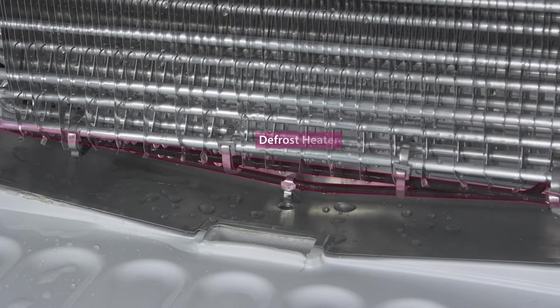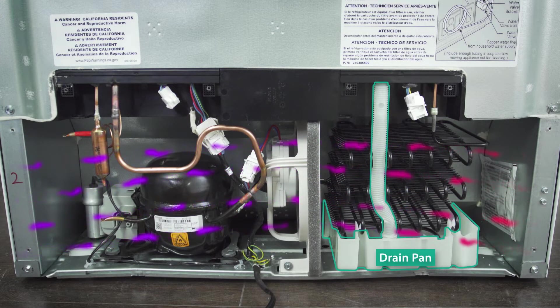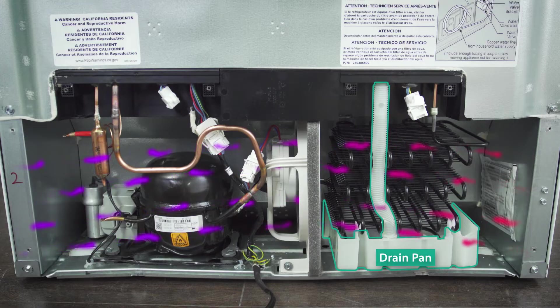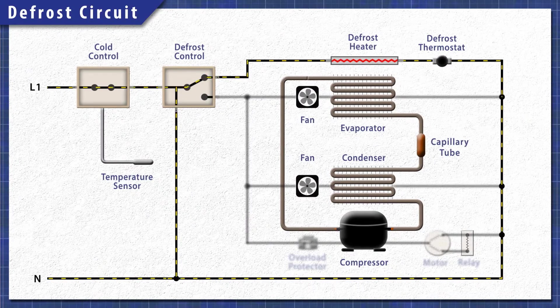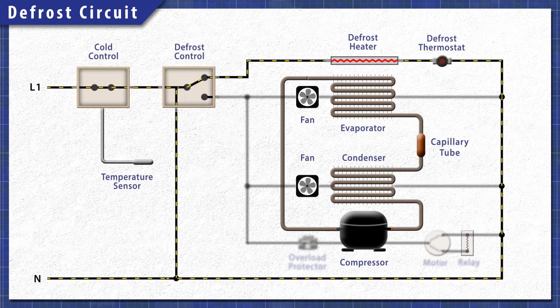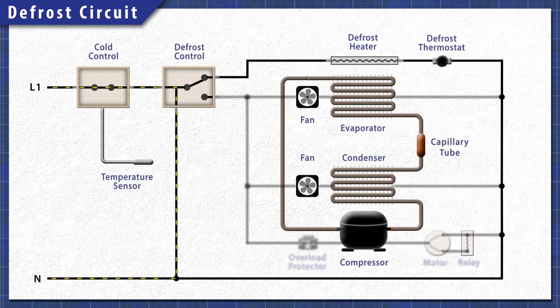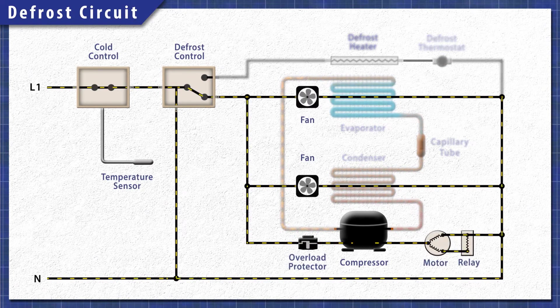Next, power is sent to the heating element which melts the ice on the coils. The water flows into the drain pan under the fridge and evaporates over time. The heating element continues to heat until the defrost thermostat warms up and disconnects power. Once the time is up, power switches back to the cooling circuit.